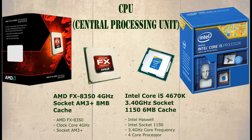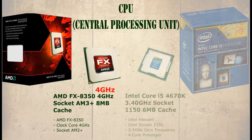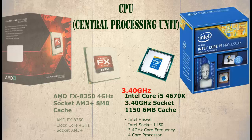In our first example we find that this CPU is manufactured by AMD. The model number is FX8350 with a clock speed of 4GHz, or 4,000 million cycles per second. In the second example the CPU is manufactured by Intel, with model number i5-4670K and a clock speed of 3.4GHz.